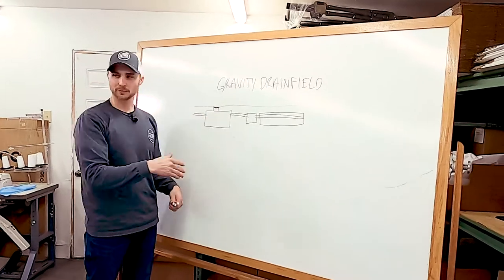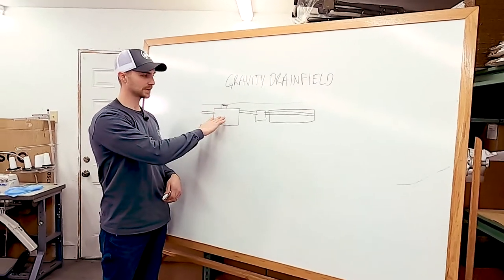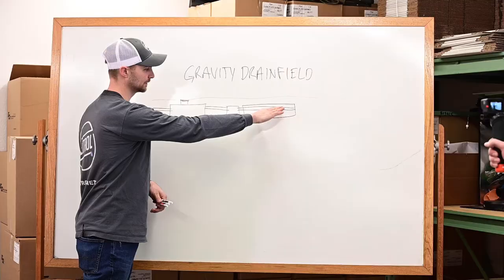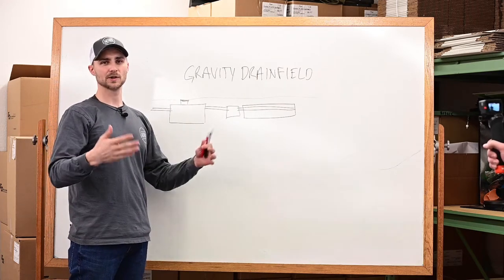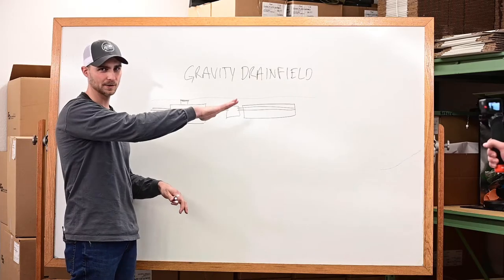Gravity septic systems work by gravity, obviously. As water comes into your tank, the water flows out into your drain field, into your distribution box, typically then into a trench or bed system, gravity the whole way.